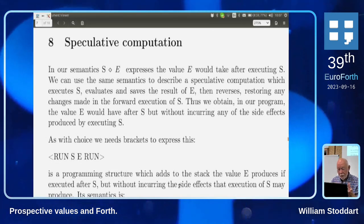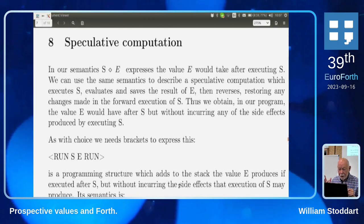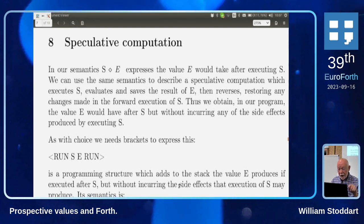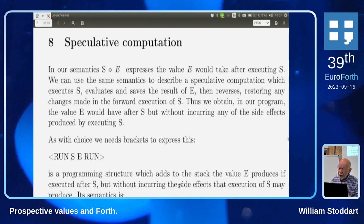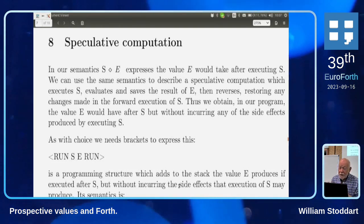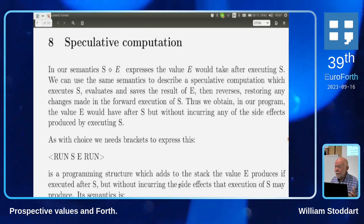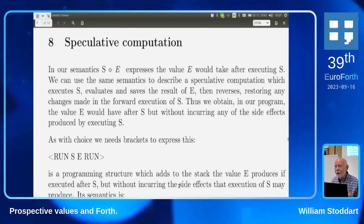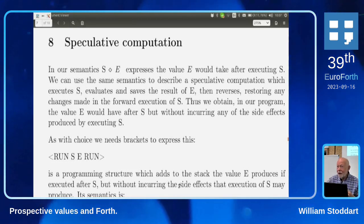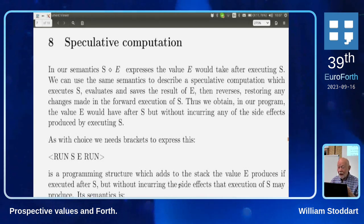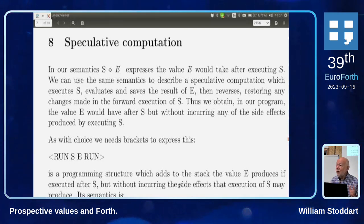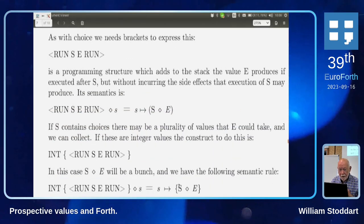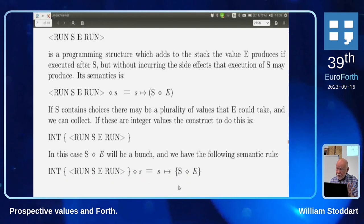The same semantics can represent an if statement — the branch that runs gives an answer and the other branch gives nothing, so null is essential to avoid a contribution from the branch that doesn't run. We also have a Forth structure for speculative computation using 'run' brackets: you run s, it gives you the value of e, but then runs backwards. So you get what e would be were you to run s, but without any actual changes to variables or state — you can probe ahead, like exploring chess moves, and nothing changes.